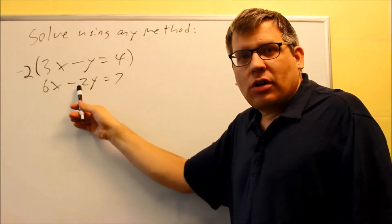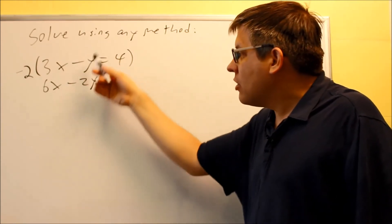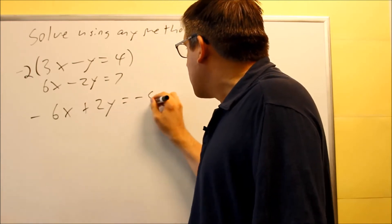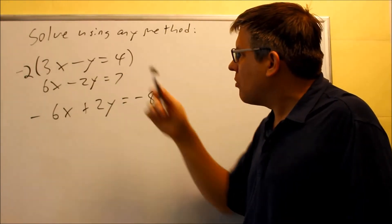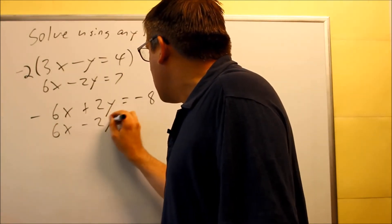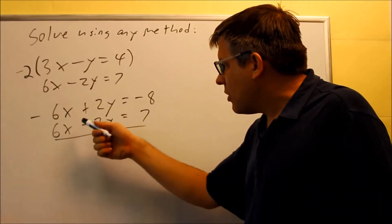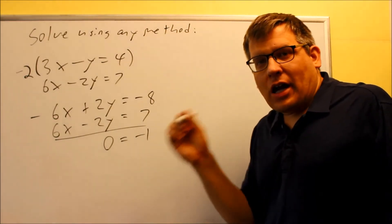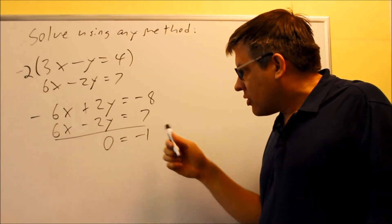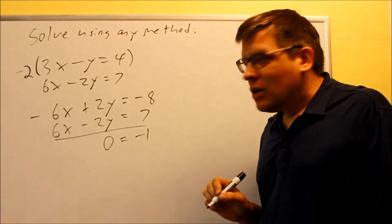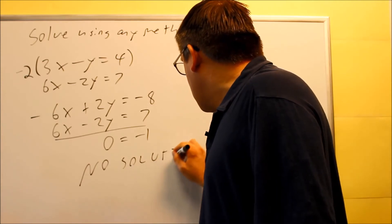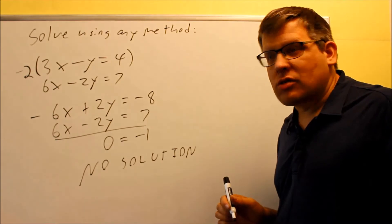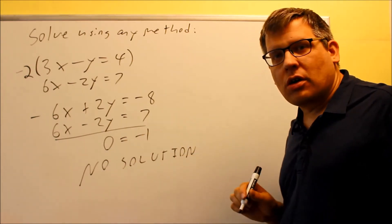I multiply the first equation by negative 2, giving me negative 6x plus 2y equals negative 8 — don't forget to multiply everything on both sides including the constant. The second equation is 6x minus 2y equals 7. Adding them together, everything cancels on the variable side and I get 0 equals negative 1. In the notes I did this a different way and got 8 equals 7 — also a false statement. If you get any false statement, that means the answer is no solution. On the graph, those lines would be parallel and never cross.